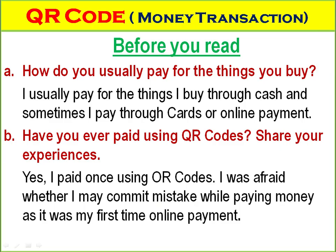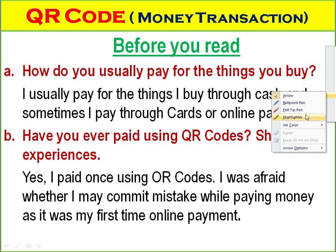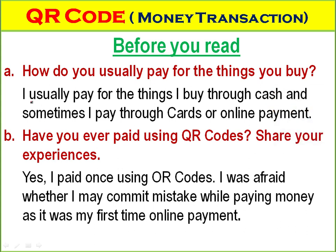Before dealing with the chapter, we have to see some of the questions mentioned in our text. Question A: How do you usually pay for the things you buy? The answer is: I usually pay for the things I buy through cash. Sometimes I pay through cards or online payment.